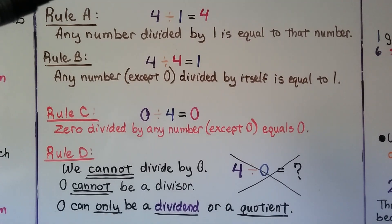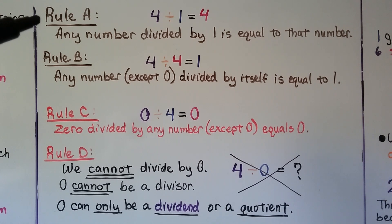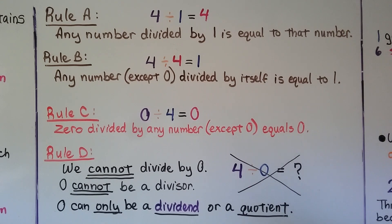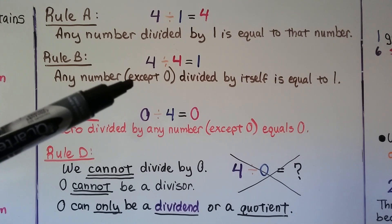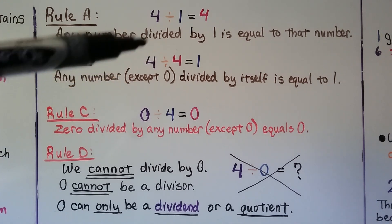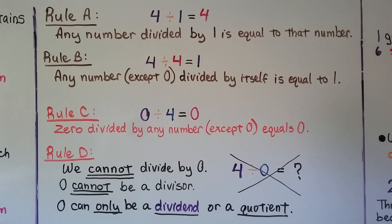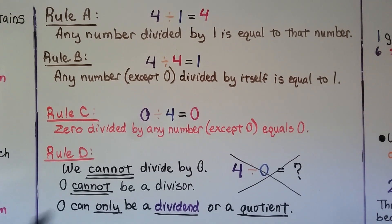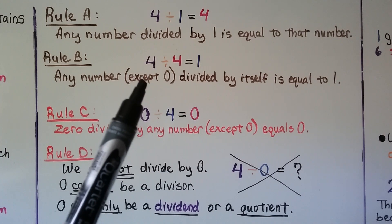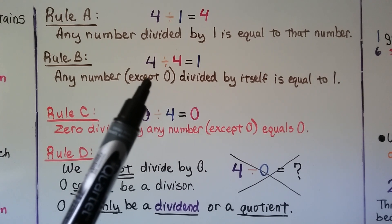Our first rule — Rule A — says any number divided by 1 is equal to that number. We have 4 divided by 1, it's going to equal 4. Our next rule — Rule B — says any number except 0 divided by itself is equal to 1. 4 divided by 4 is equal to 1. Just remember, we can't do that with 0 — 0 divided by 0 is not 1.